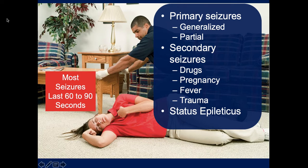Most generalized grand mal seizures last no more than about 90 seconds. Consider the EMS perspective: if a person at McDonald's has a grand mal seizure and co-workers call 911, by the time you arrive six and a half minutes later, the seizure has already stopped. The patient will be in the post-ictal phase on the floor—sweaty, tachycardic, confused, with elevated blood pressure and low oxygen saturations. This is a typical presentation of a patient who has just finished having a seizure.